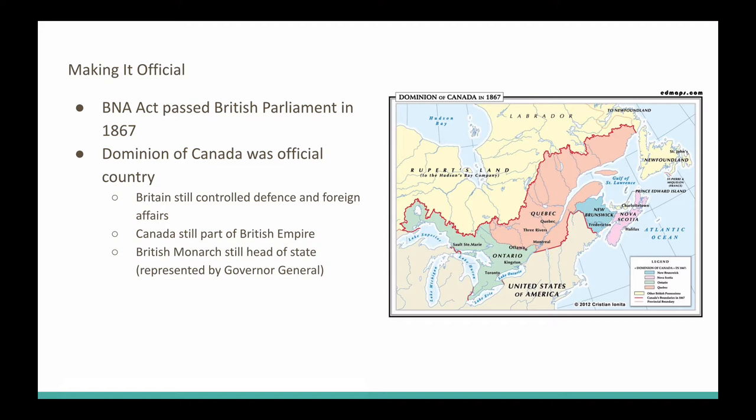Here's a map of the Dominion of Canada from 1867. It passed British Parliament, and July 1st, 1867 was the official first day of Canada — Canada was born. Not a single shot was fired in the creation of Canada, which is pretty marvelous. The Dominion of Canada is now an official country, still with very close ties to the British. For example, Britain still controlled Canada's national defense and foreign affairs — that was one of the compromises. Canada was still part of the British Empire, and the British monarch remained head of state, though today that is more of a symbolic gesture.